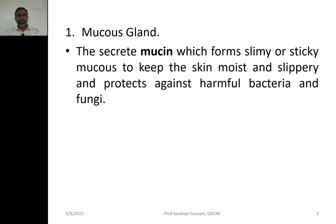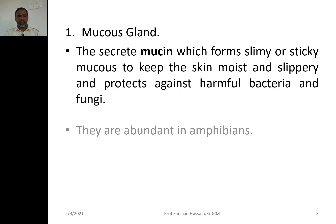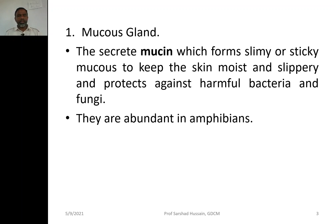The first gland is the mucous gland. Mucous glands secrete mucin, which is a slimy and sticky substance — slimy meaning slippery, and sticky meaning things adhere to it. Mucin is secreted to keep the skin moist and slippery, and because of this it protects against harmful bacteria and fungi, which cannot attach and flourish on the skin due to the presence of mucin. Mucous glands are very abundant in amphibians.